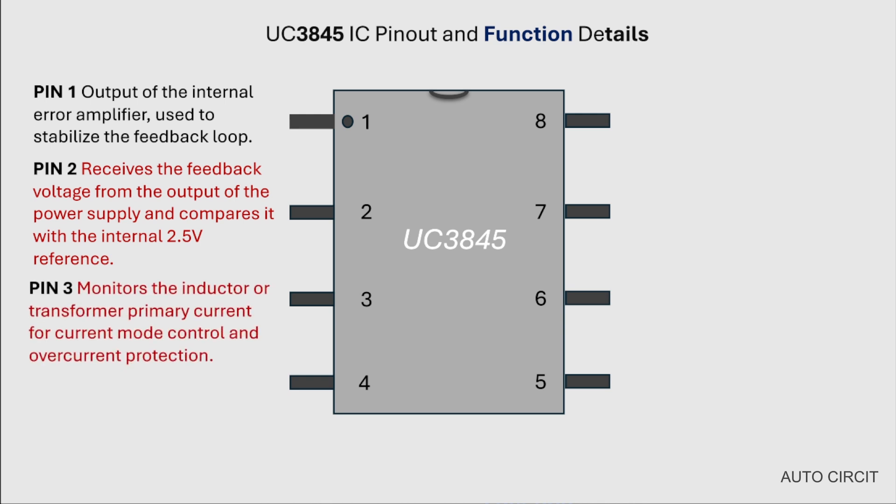Pin 3: Monitors the inductor or transformer primary current for current mode control and overcurrent protection. Pin 4: Connects an external resistor and capacitor to set the oscillator frequency.